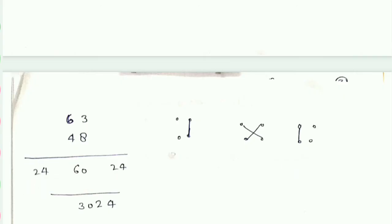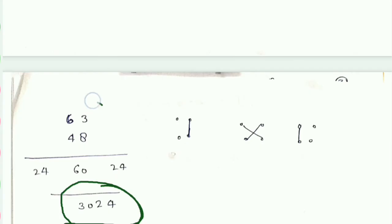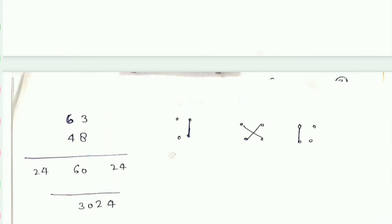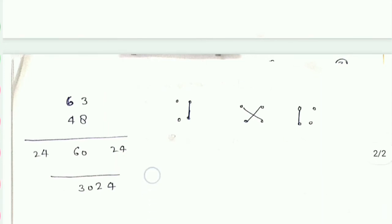24 में से 4 लिख लिया, यह 2 आगे add कर देंगे तो 26 हो जाएगा — 2 लिख लिया और यह 6 आगे add कर देंगे: 24 plus 6 = 30। तो यह 3024 — जैसा कि हमने पीछे देखा था कि इनको multiply करने पर 3024 आया था। यह हम practice करेंगे तो बहुत जल्दी से इसको सीख सकते हैं। अब इसी प्रकार से next वाले का answer देखते हैं।